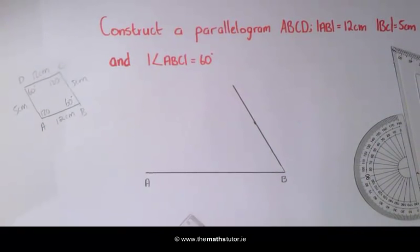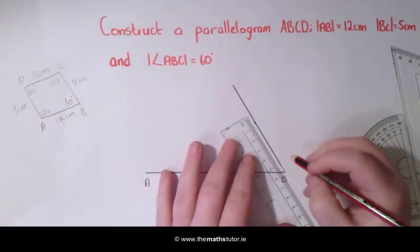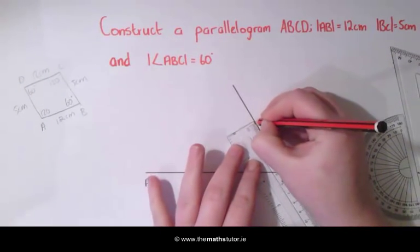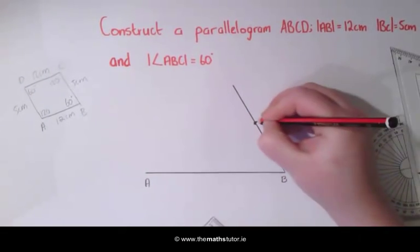This side has to be 5 cm so we are going to mark off 5 cm. So we know this point here is C.